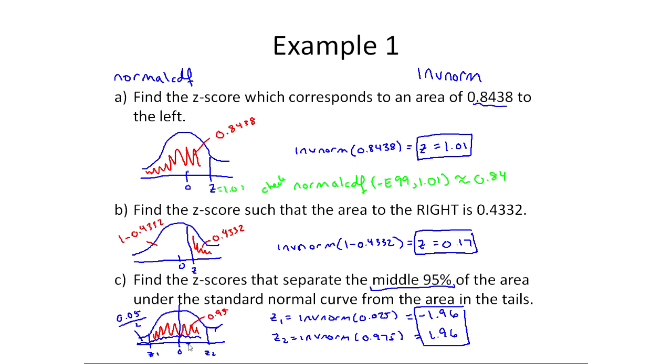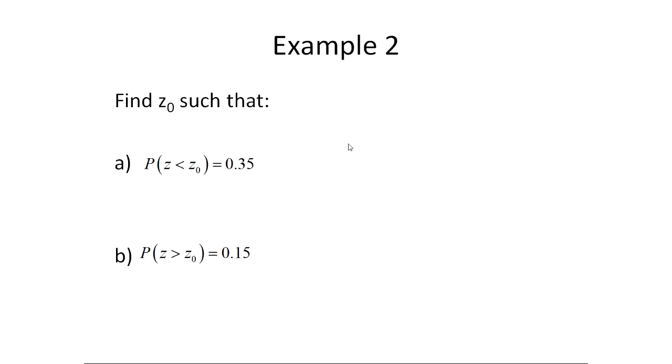I could essentially ask you the same types of questions but in a different format that looks so different. I have two examples here. Find z naught such that z is less than z naught has a probability of 0.35, and another question, z greater than z naught has a probability of 0.15. Probability, area, and percentages are all the same thing.